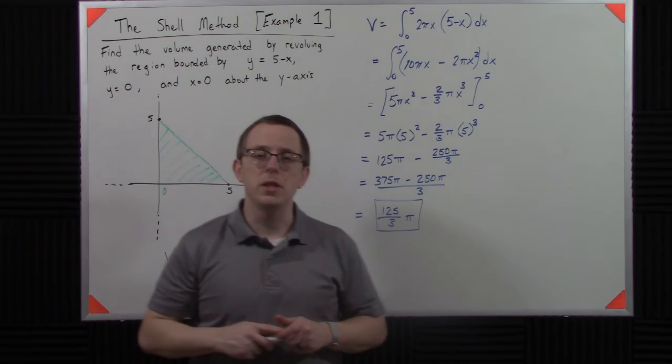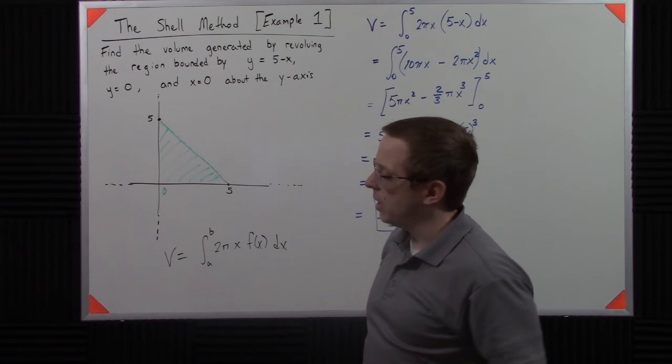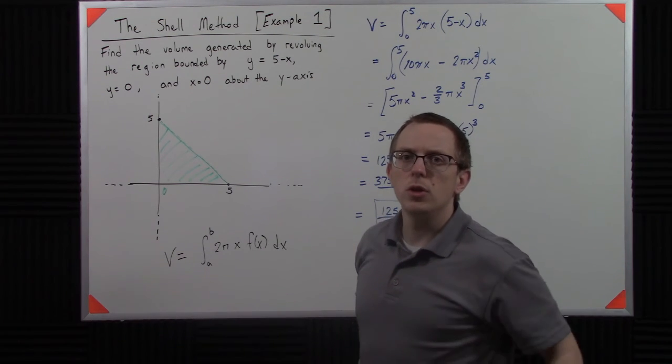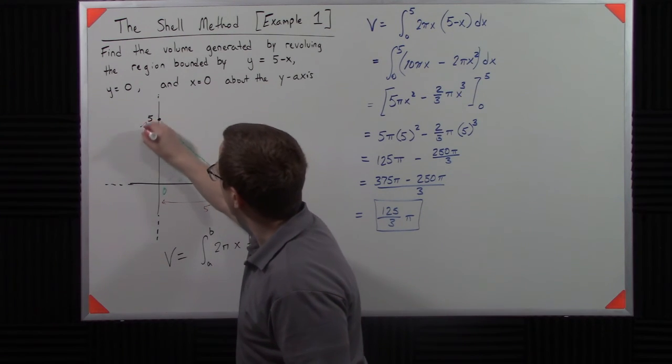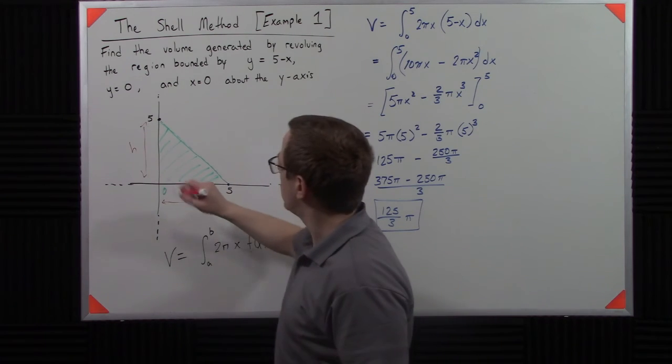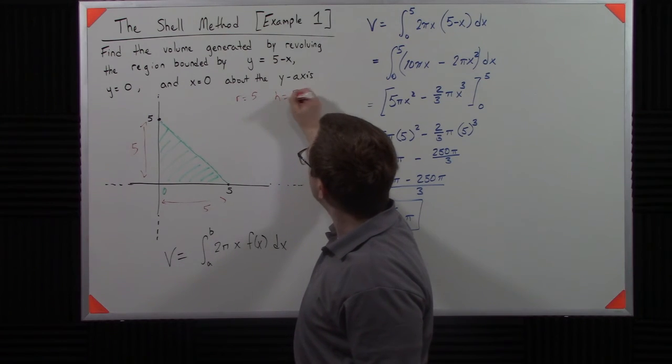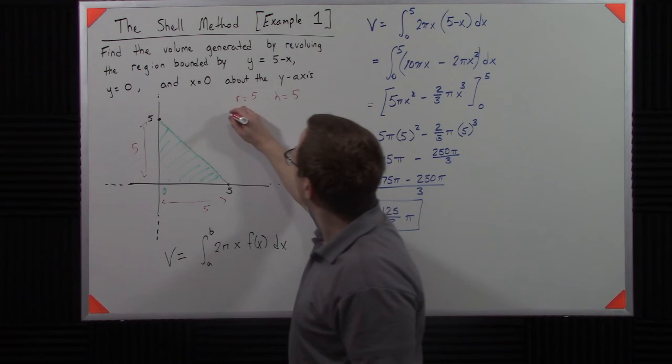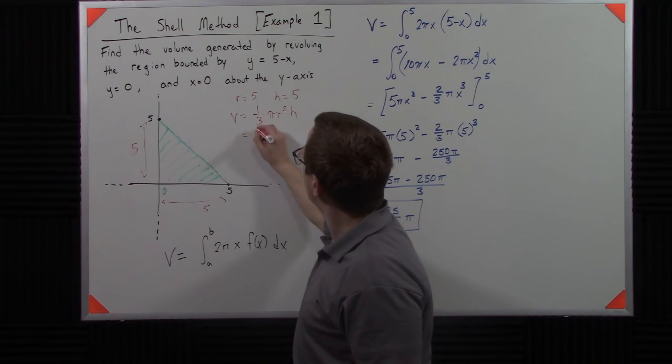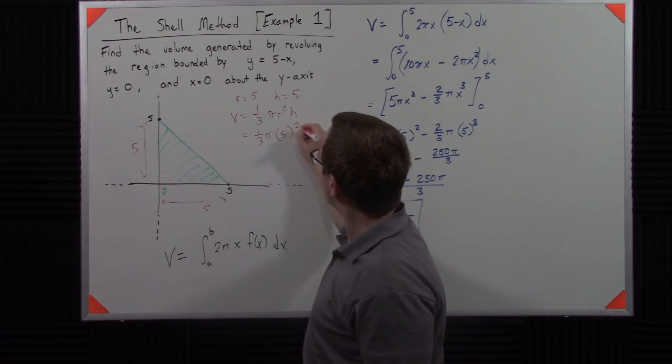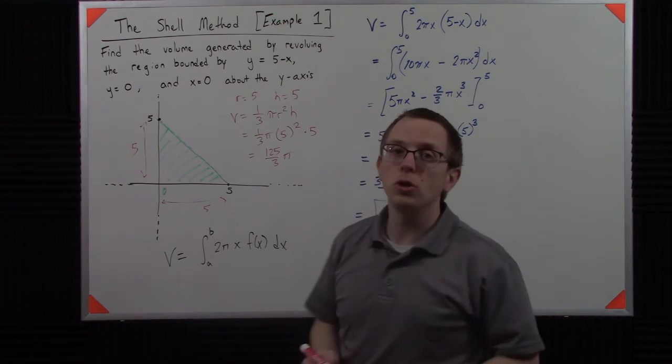Now, we probably could figure this out fairly simply. This is going to be a right circular cone. So a right circular cone would have a radius of 5. It would also have a height of 5. So if r is 5, h is 5, remember that the volume of a right circular cone is 1 third pi r squared h, 1 third pi, 5 squared times 5, 125 thirds pi.